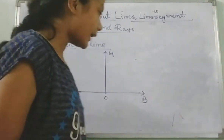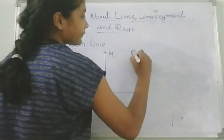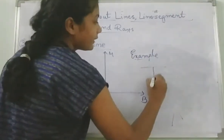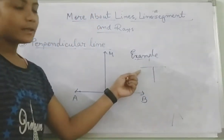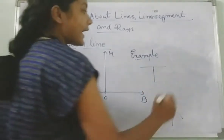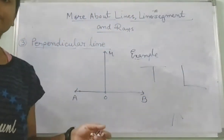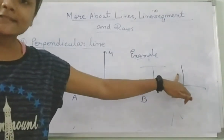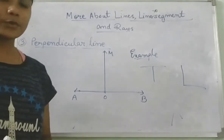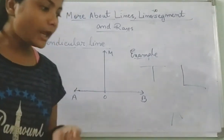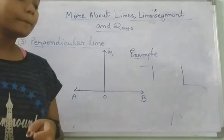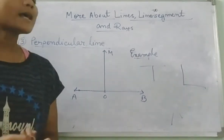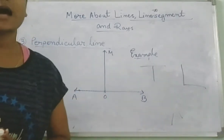Examples of perpendicular lines are the letter T, where a horizontal line meets a vertical line, and the letter L — this is the horizontal and this is the vertical line or line segment. So when a vertical ray, line, or line segment meets a horizontal ray, line, or line segment, a perpendicular line is formed.